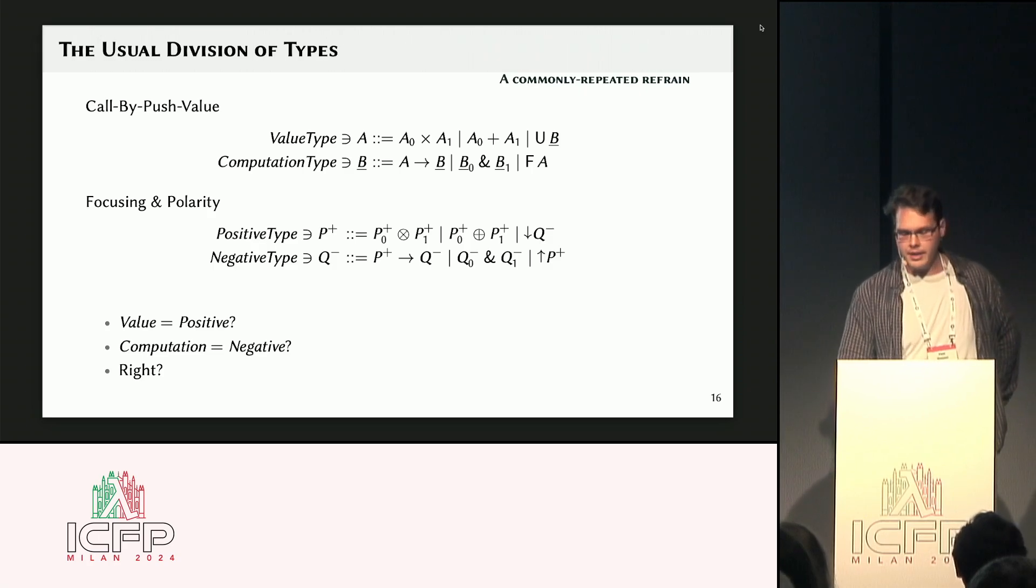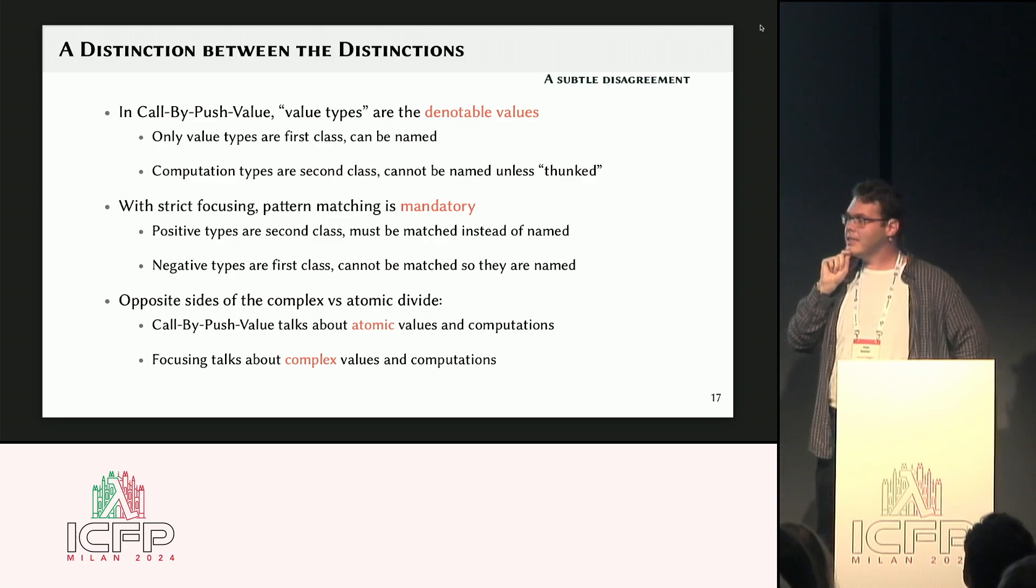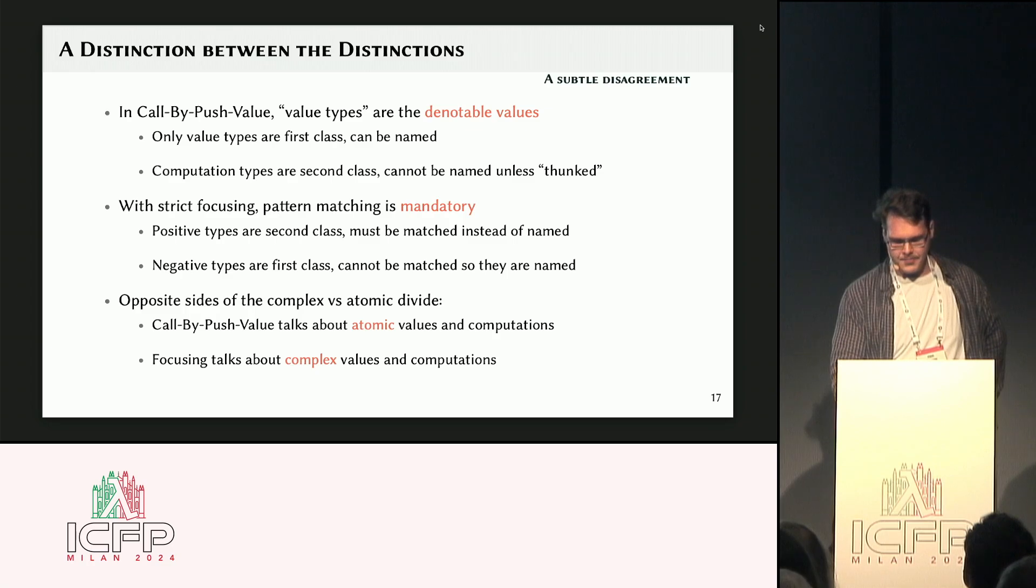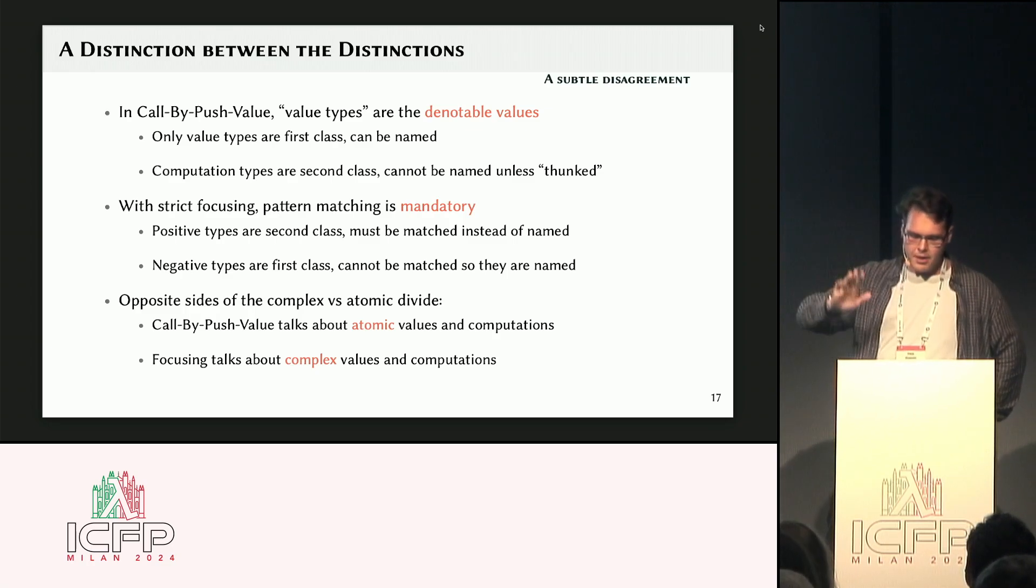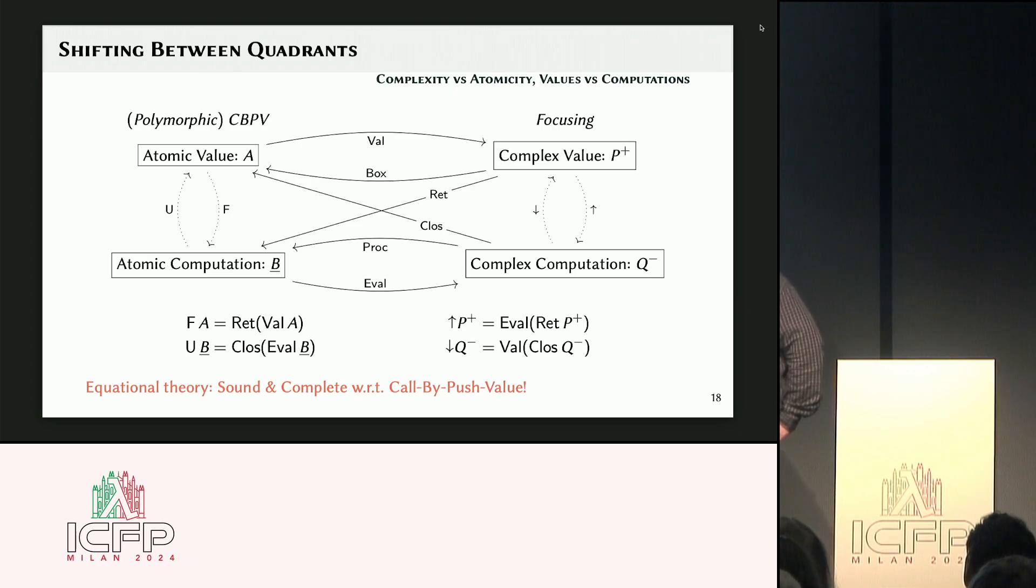But there's one annoying difference, which is they disagree on who gets names, right? So in call by push value, only values can be named. But in focusing, I cannot name values because I have to pattern match on them. And that's basically the difference, right? So call by push value is about atomic things. Focusing is about complex things. And all the combinations, right? So there's two combinations of two, or four combinations of two choices of two. And there's sort of different ways of going between them. And we can decompose the normal kind of shifts into these smaller, low-level operations.